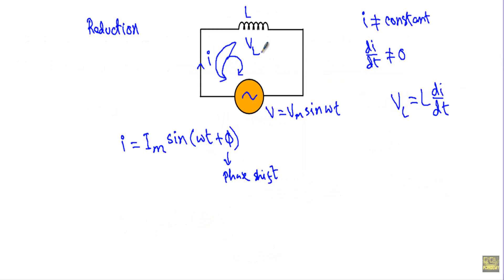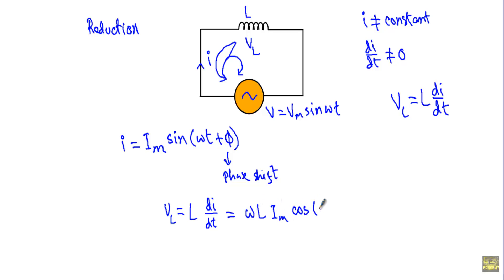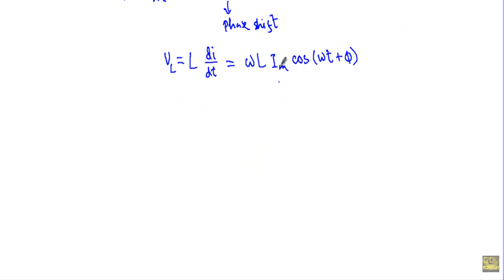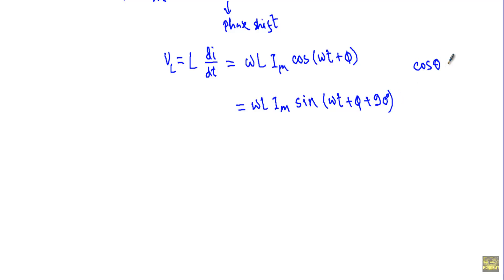The voltage developed in the inductor, or the back EMF, is VL = L·dI/dt. If I take the derivative of I = Im sin(ωt + φ), I get ω·Im·cos(ωt + φ). At the last portion I will convert all quantities into phasor form, so I convert cosine to sine: VL = ω·L·Im·sin(ωt + φ + 90°), using the identity cos θ = sin(θ + 90°).